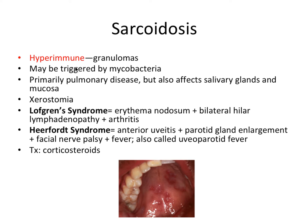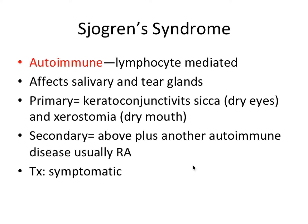Since sarcoidosis is hyperimmune, we use corticosteroids, which are anti-inflammatory and can calm down the overactive immune system. Next we have Sjögren's syndrome, which is probably one of the most tested autoimmune conditions for dental exams because it affects the salivary glands very significantly. Sjögren's is autoimmune and lymphocyte mediated. It affects the salivary and tear glands, essentially drying out the entire body, and it has two main forms.